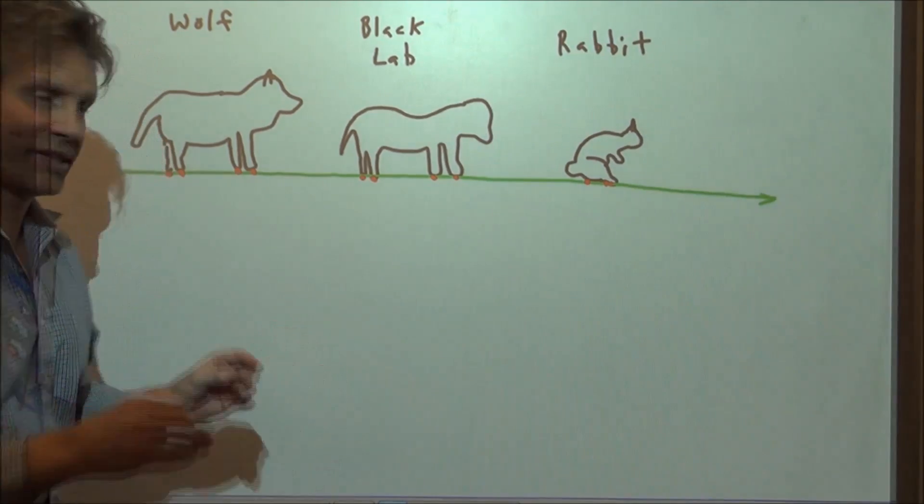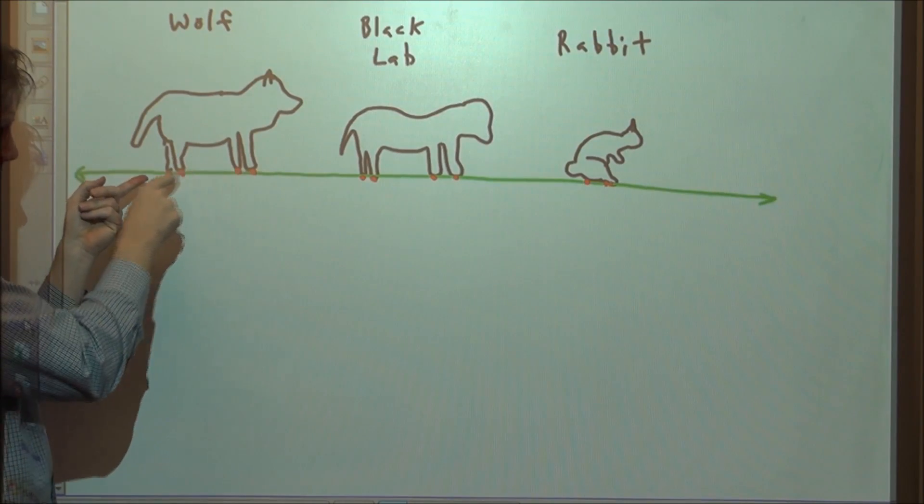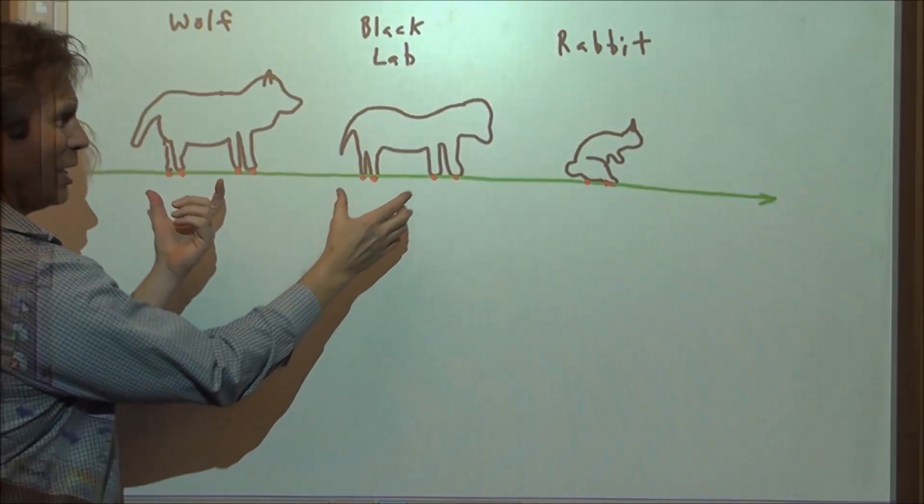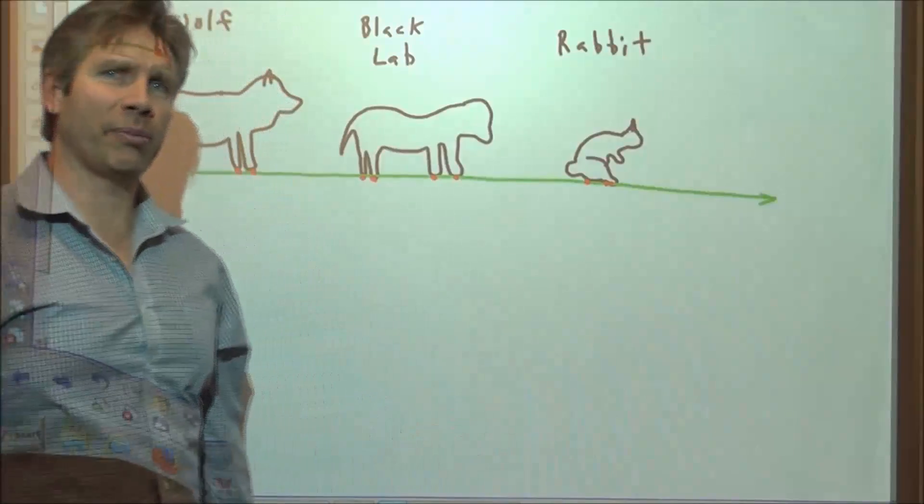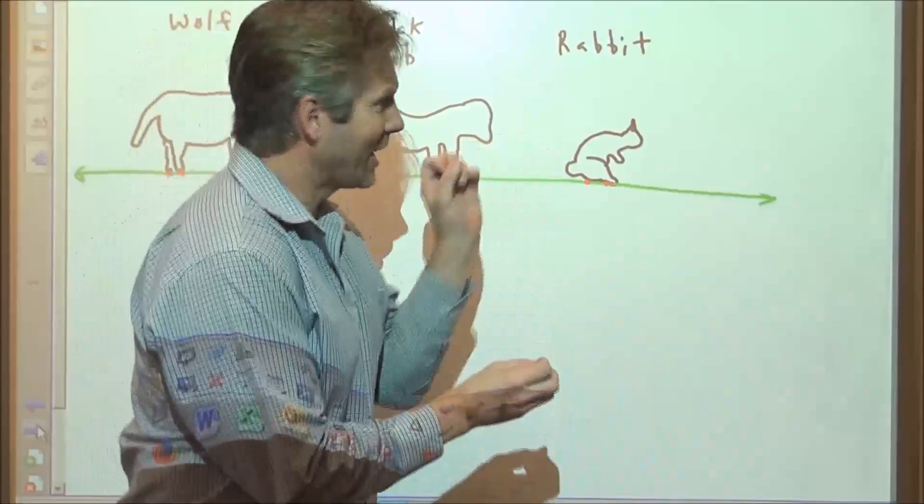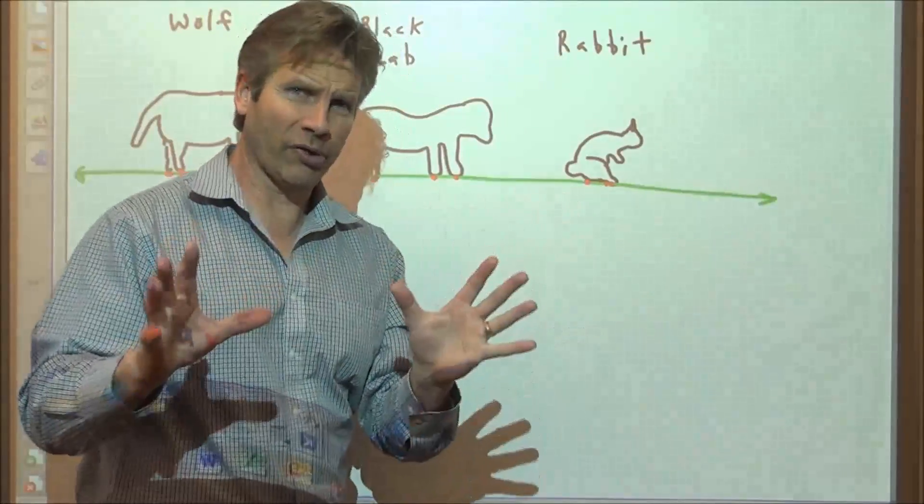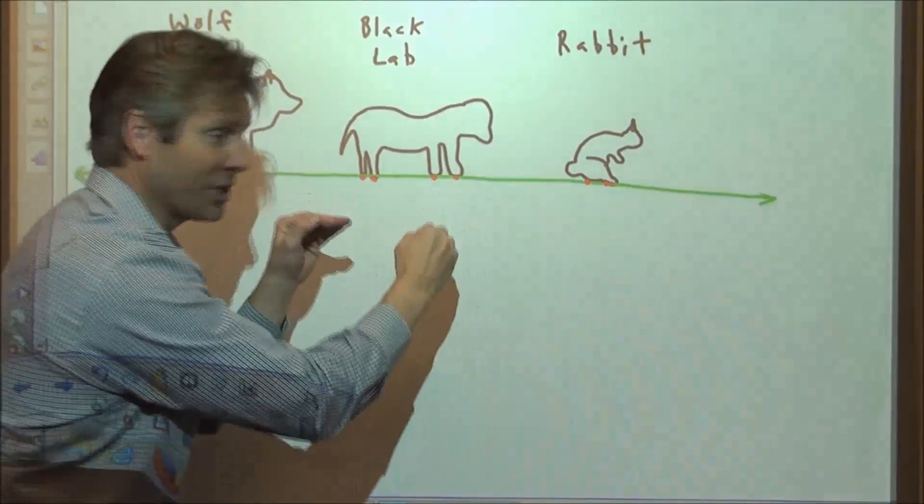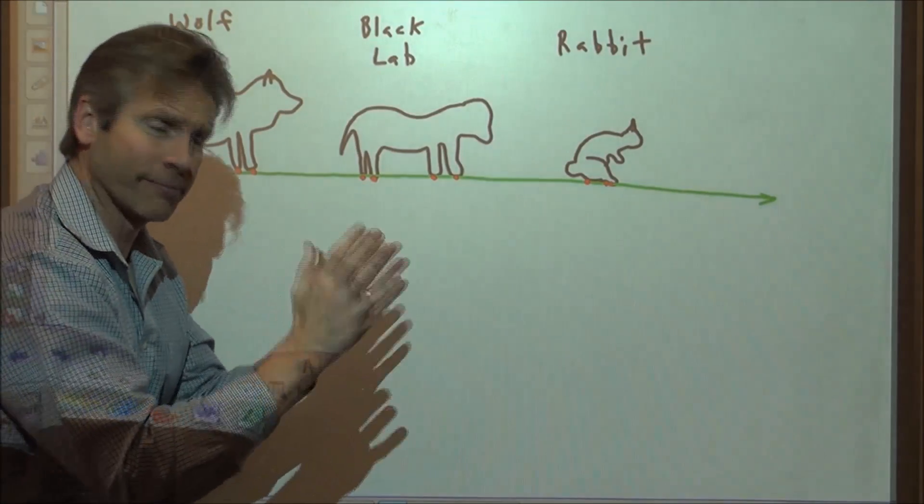Now what if we did this? What if our initial focus was, the wolf touches the ground in four places. The black lab also touches the ground in four places, but a little bit closer together. The rabbit touches the ground in three places if it's sitting, but if it's standing, maybe two, but if it's running, it's four. There we go.